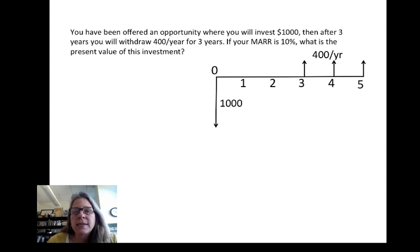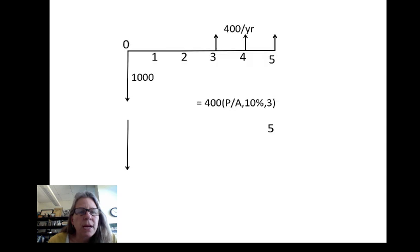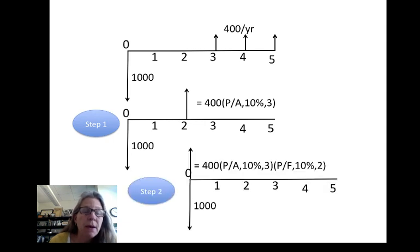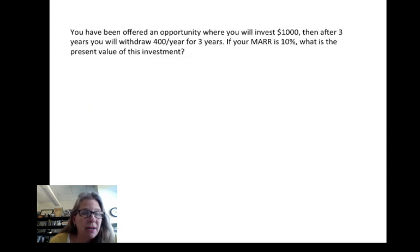Now, what I'm going to do here is I'm going to do this in a two-step process. The first step I'm going to do is I'm going to take those three years of cash flow out in the future that occur in 3, 4, 5, and I'm going to bring them back to a present value, but that present value is going to be occurring at year two because present values always occur one year before the cash flow began. So that's the first step I'm going to do. And then the second step, I'm going to take that 400 times P given A, 10% for three years, and I'm going to bring it back to time period zero by multiplying it by a factor of P given F, 10% for two years. So I hope that makes sense.